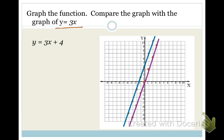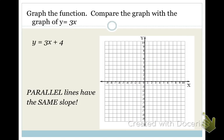Hopefully your line looks something like mine. Now I would like you to graph the equation y equals 3x plus 4 in Desmos. Pause your video and do that now. What do these two lines have in common? They have different y-intercepts — one passes through 0 and one passes the y-axis at 4 — but they both have the same slope. Write this down: all parallel lines have the same slope.